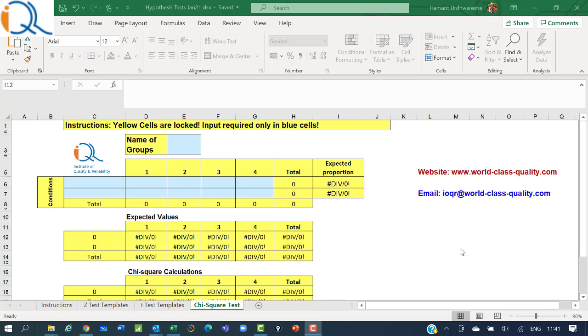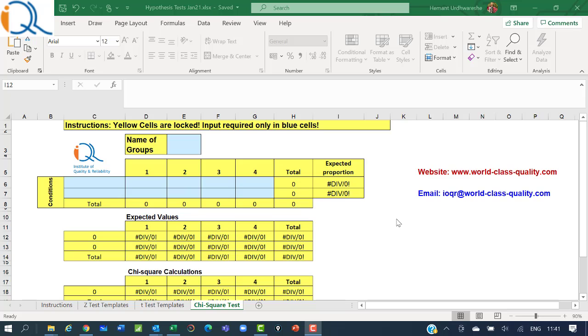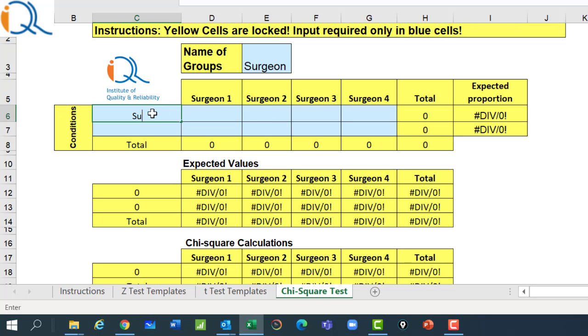You can also use our template for hypothesis testing and you can download the same from our website www.world-class-quality.com or you can write to us on email id ioqr at world-class-quality.com. In this template, you just need to provide input in the blue squares. So, first I provide the name of the groups as Surgeon and you can see that it now becomes Surgeon 1, 2, 3, 4. Then I can say the first row as successful and the second row as not successful or unsuccessful.